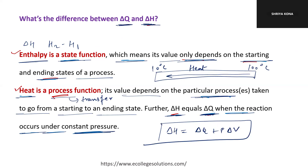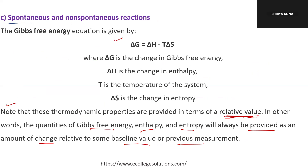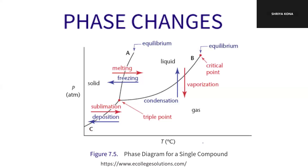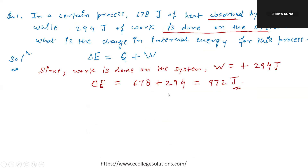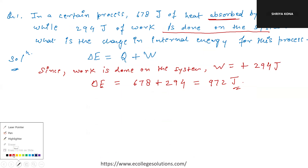So Q is a process function depending on what happens during the reaction, but H depends only on the initial and final states. In a practice problem: if 678 joules of heat is absorbed by the system and 294 joules of work is done on the system, what is the change in internal energy?